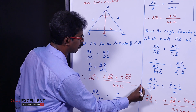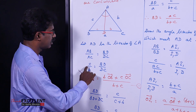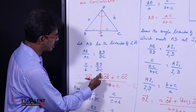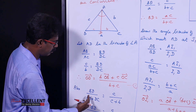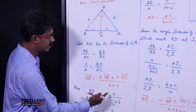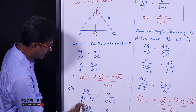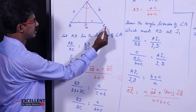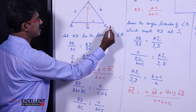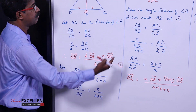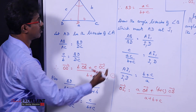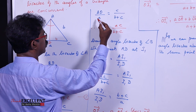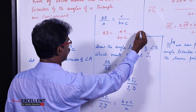Now using componendo: BD by (BD plus DC) equals c by (c plus b). BD plus DC is the full BC, which equals a. So BD by a equals c by (b plus c), which gives BD equals ac divided by (b plus c). This is result number two.